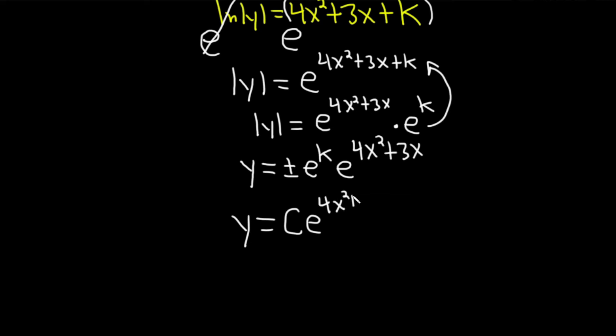You might be thinking, can you do that? We just did. And now I'm going to label it. So where c is equal to plus or minus e to the k. Beautiful, right? That's every single step.